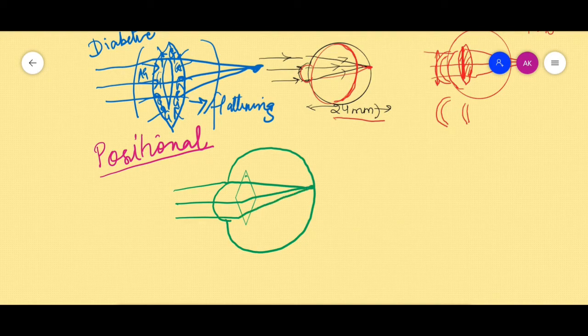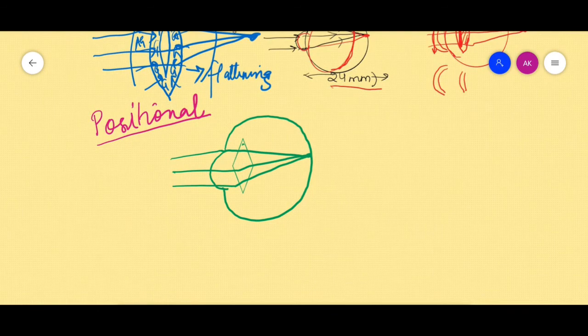the retina. Now what will happen if because of some reason this lens gets displaced, somewhat posteriorly? What will happen is the convergence, instead of converging from this point, it will start from here.